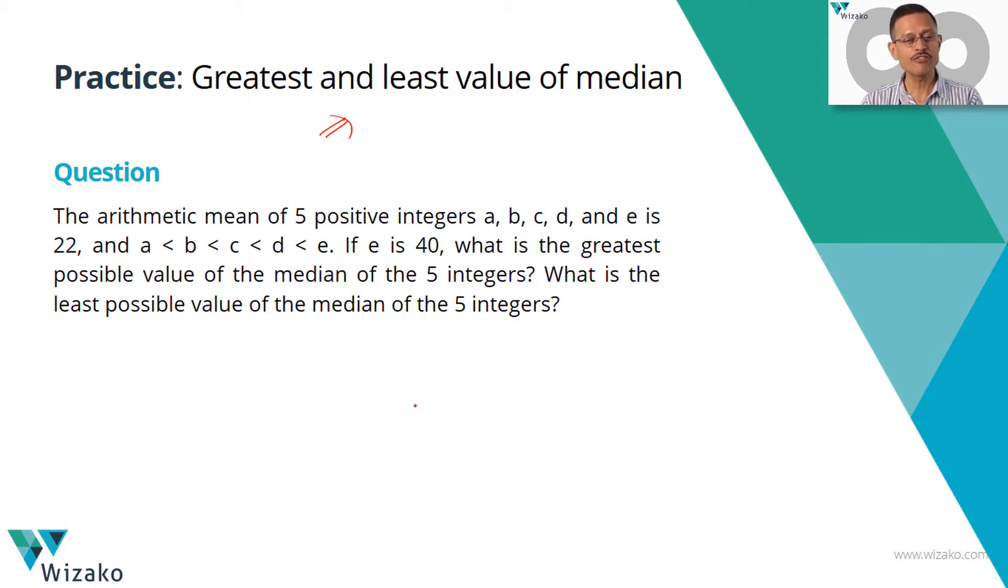The arithmetic mean of five positive integers A, B, C, D, and E is 22. This is the ascending order of the numbers, which means all these numbers are distinct. If E is 40, the largest of these numbers is 40. What is the greatest possible value of the median of the five integers? So that's part one. What is the least possible value of the median of these five integers? That's part two.